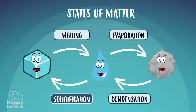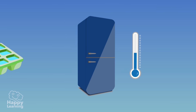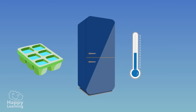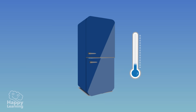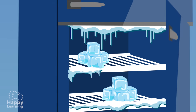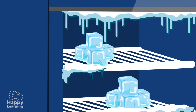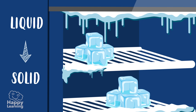Solidification is the opposite of melting. Matter changes from liquid to solid form. It happens when we put water in the freezer and it turns into ice — it goes from liquid to solid.